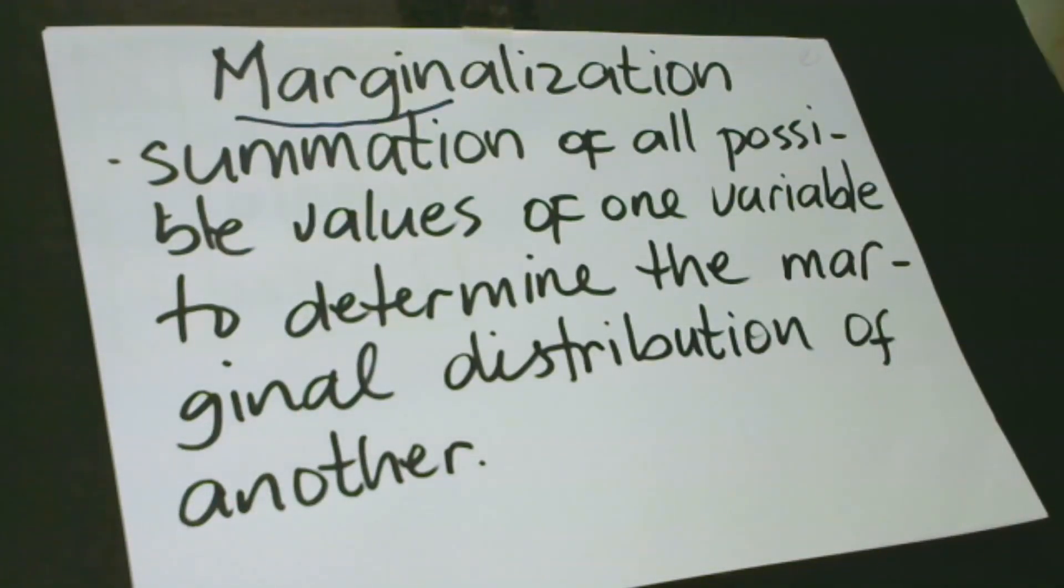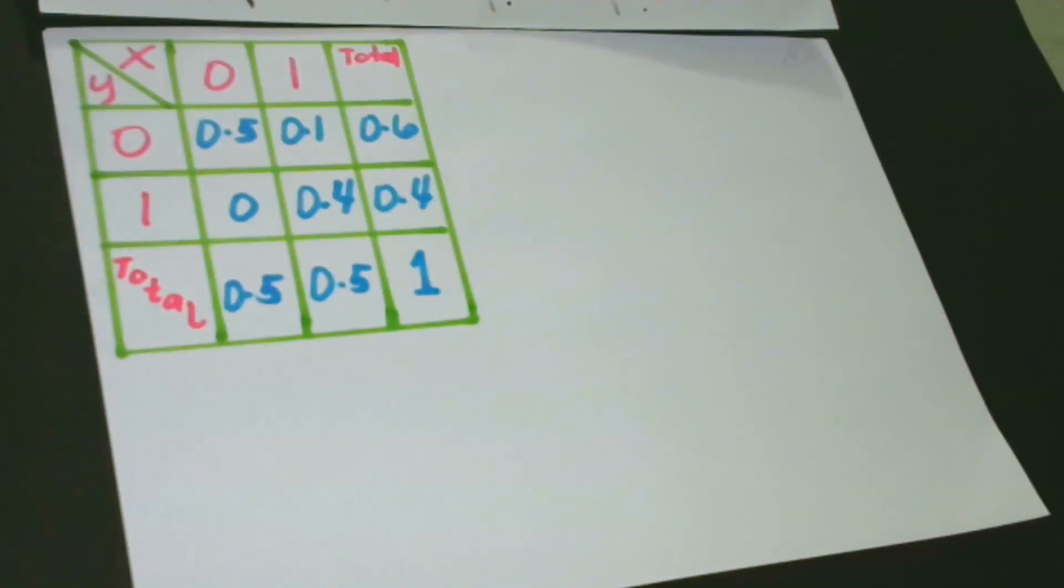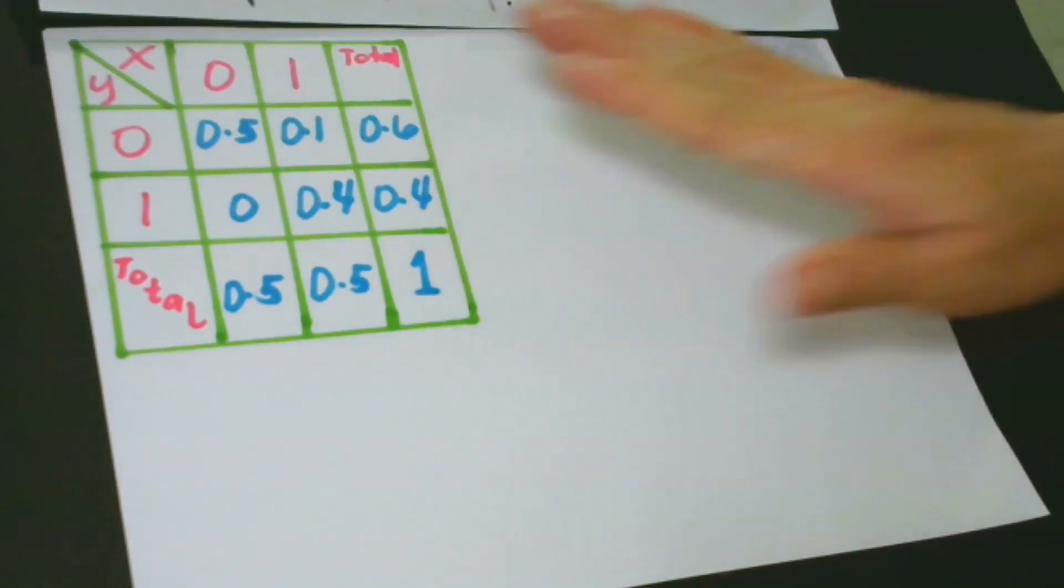Basically, the sum of probabilities can be found at the margin of a table. In this case, this is our example. This is the example we have actually in lesson number 5.